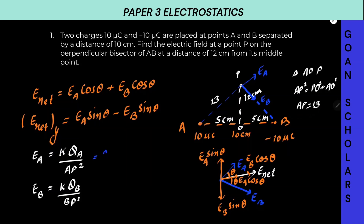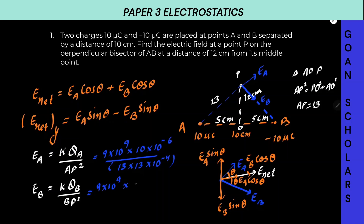Substituting: EA = 9×10⁹ × 10×10⁻⁶ divided by 13×13 × 10⁻⁴ (converting centimeters to meters). Similarly for EB: K is again 9×10⁹, charge at B is 10×10⁻⁶. We don't take the negative sign since we've already considered the direction of the arrow. And BP — from triangle POB — is also 13 centimeters. So EB = 9×10⁹ × 10×10⁻⁶ divided by 13×13 × 10⁻⁴.